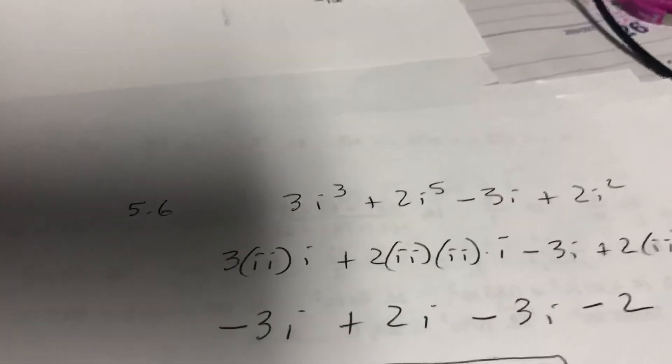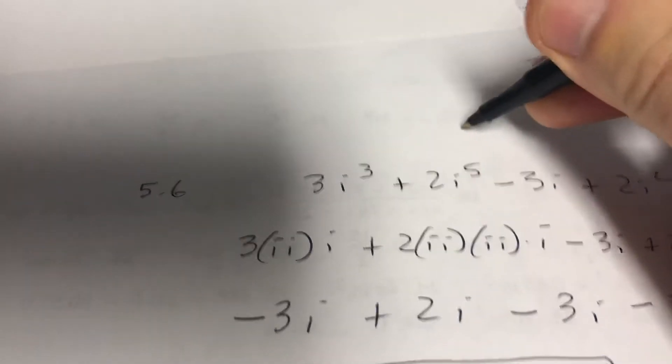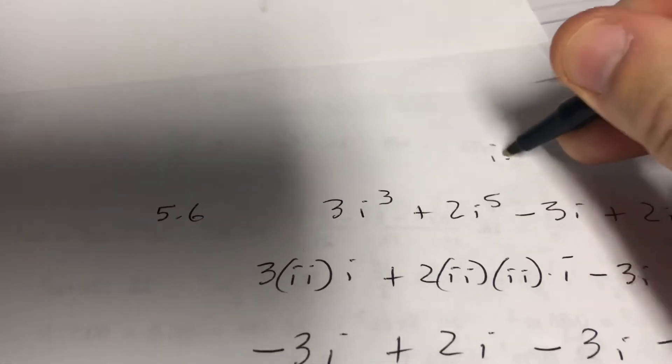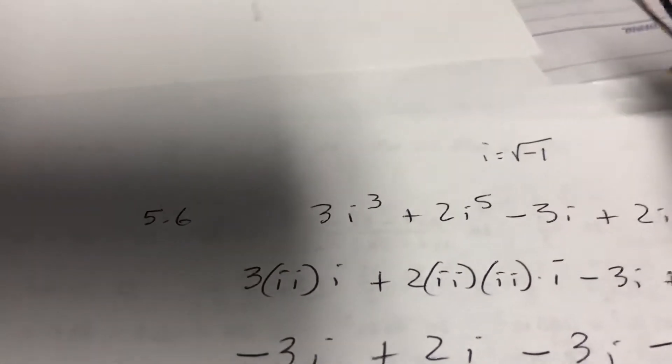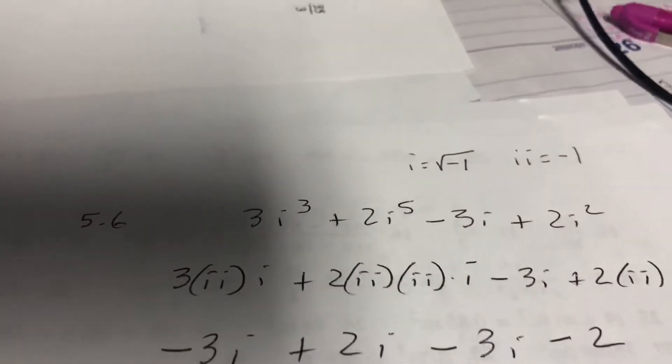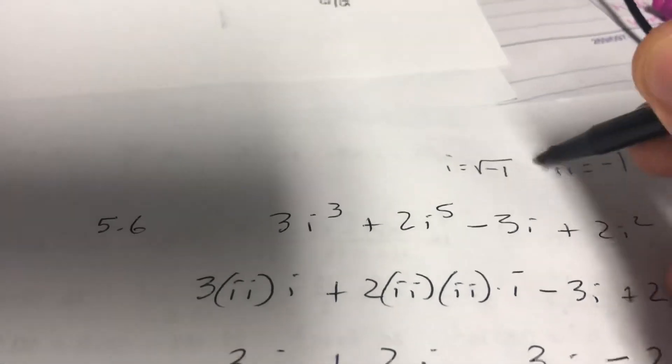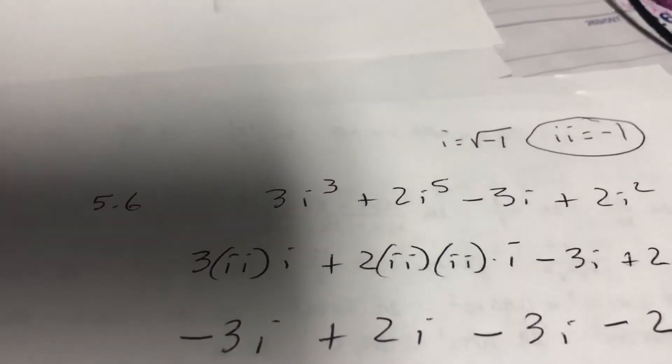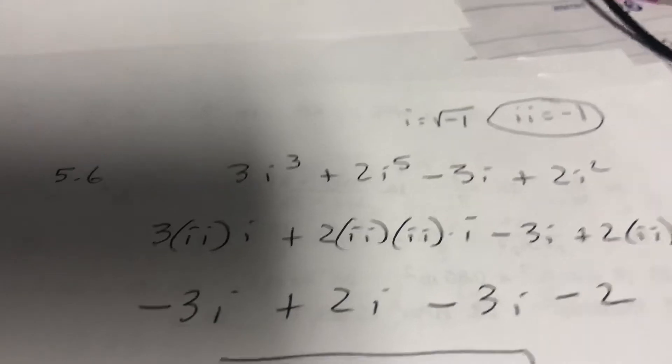5.6: Remember, i equals the square root of negative 1, and so i times i equals negative 1. That's what I want to remember - that i times i is negative 1. So when I have a problem like this...